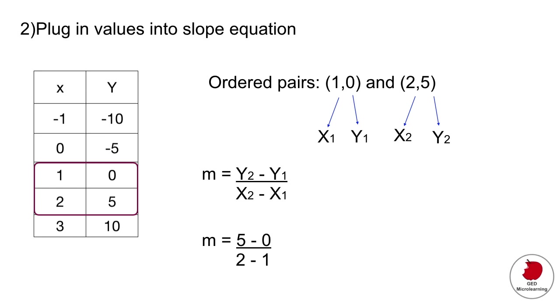When you do that, this is what you get, and the slope would be m equals 5. Essentially you're going to get the same number regardless of which ordered pairs you pick.